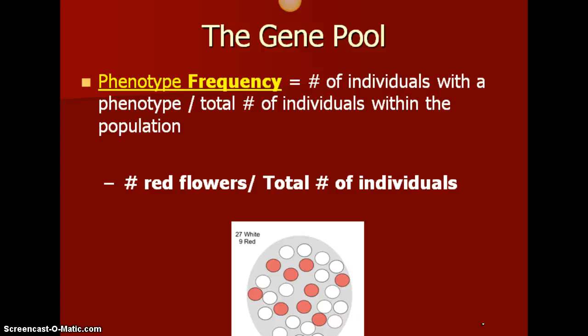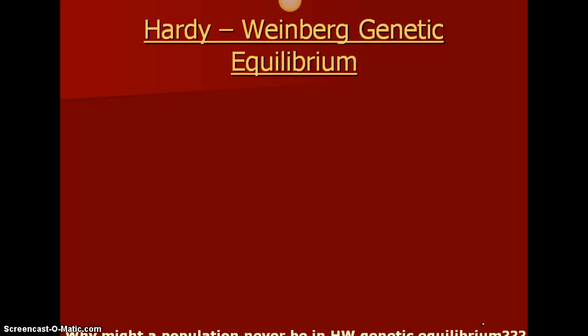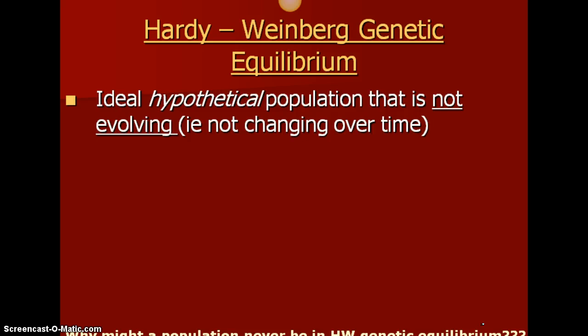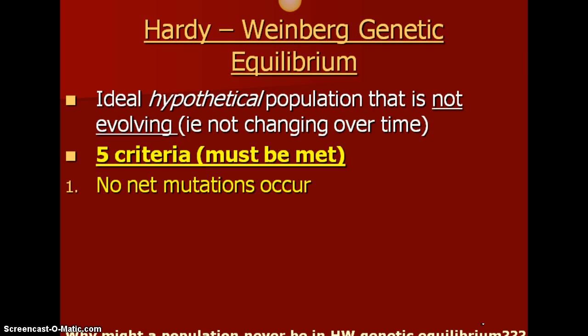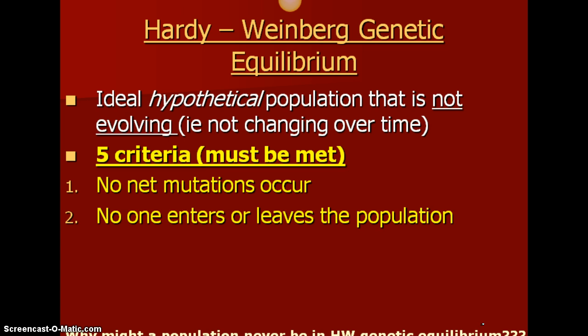Our last topic for this set of notes is Hardy-Weinberg equilibrium. Hardy-Weinberg describes an ideal hypothetical population where there would be no evolution — no changing over time. There are five ideal conditions that must happen for Hardy-Weinberg equilibrium to occur. First, there are no net mutations — absolutely no mutations in the DNA, RNA, or amino acid sequence. Second, no one enters or leaves the population — no emigration or immigration. Third, the population has to be very large, because you'd have a lot more genetic opportunities, and a large gene pool is important here.